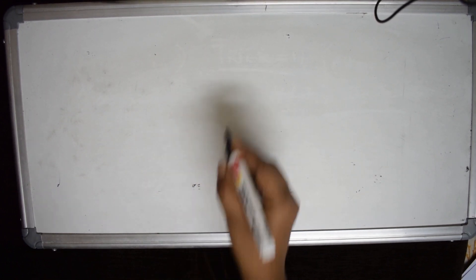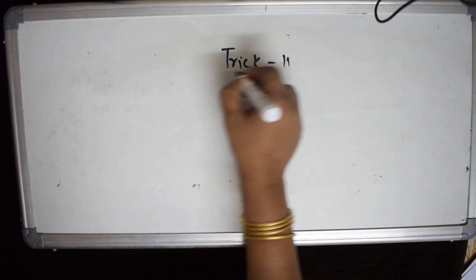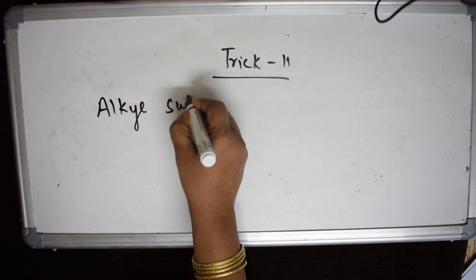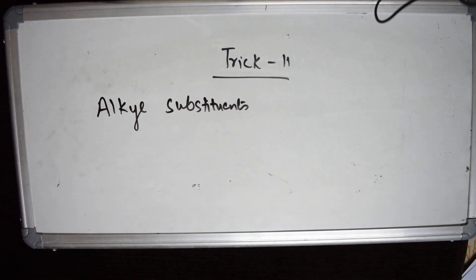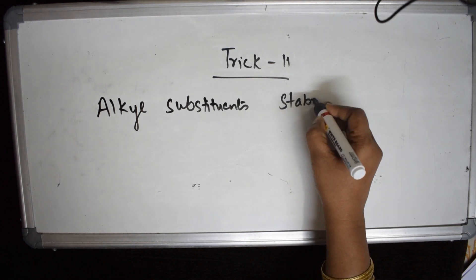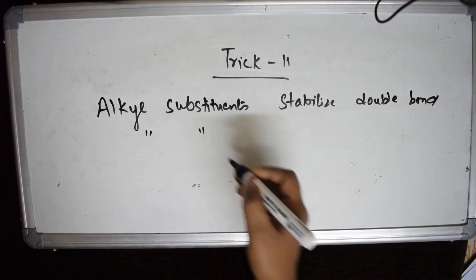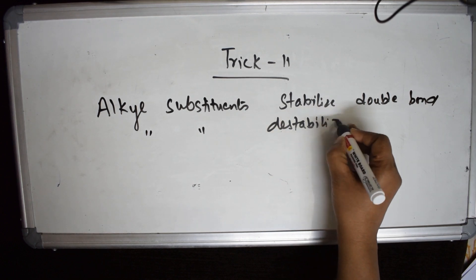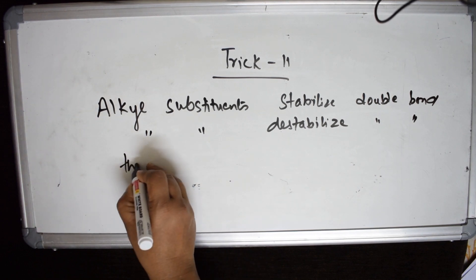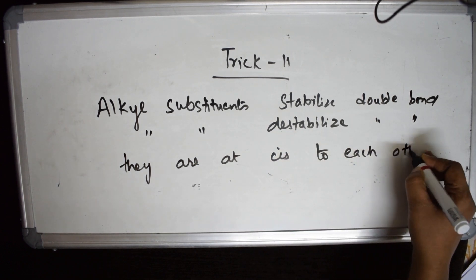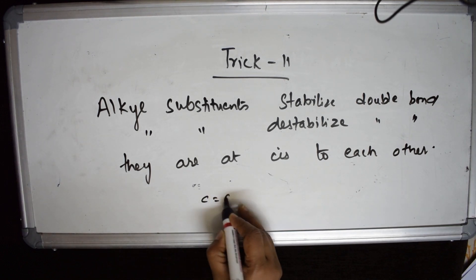Welcome to Trick 11. More alkyl substituents means more stability of the alkene. Now a new concept: alkyl substituents like methyl groups will stabilize the double bond. However, the same alkyl substituents will also destabilize the double bond when they are at the cis position to each other.